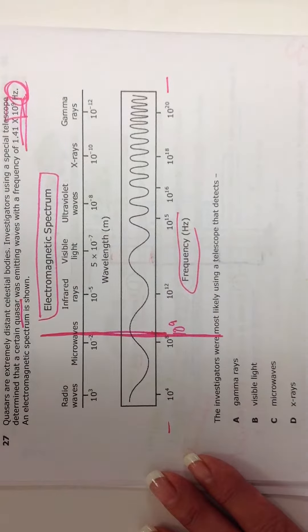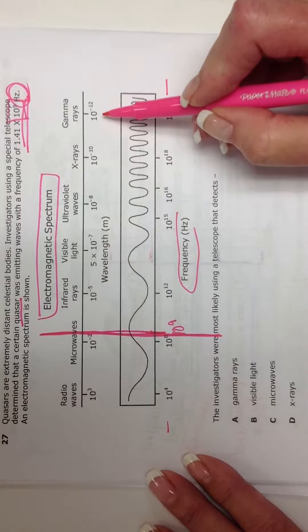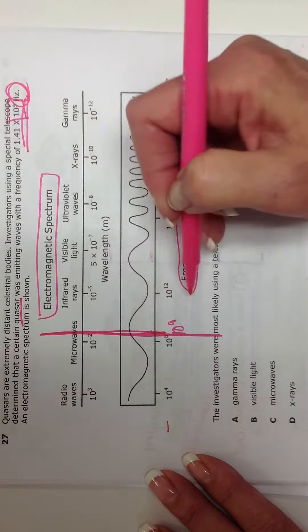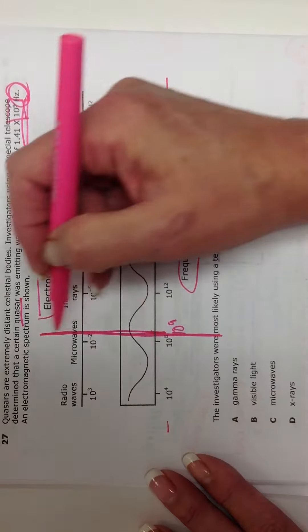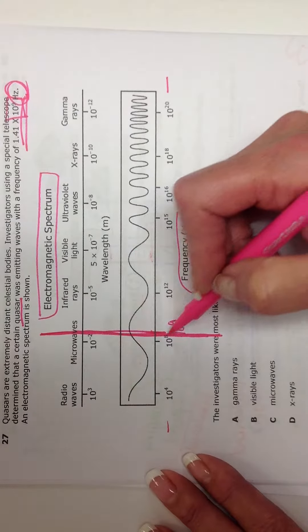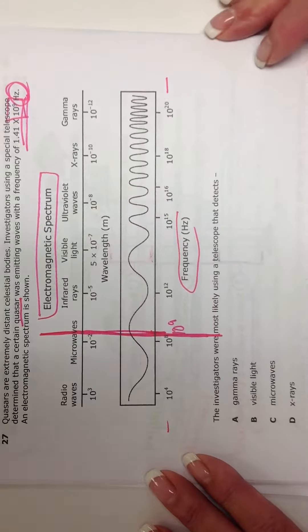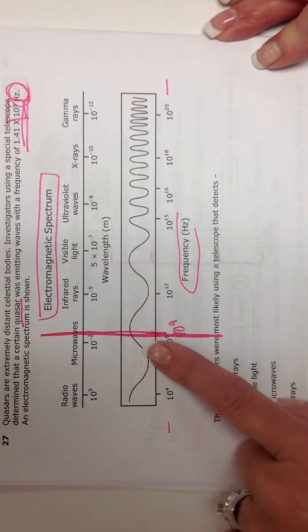All right, because these wavelengths are equivalent to the frequencies. So if I draw this line straight across the diagram, I'm in the right area with the wavelength as well, as you can see, the longer waves, and then over here the shorter waves.